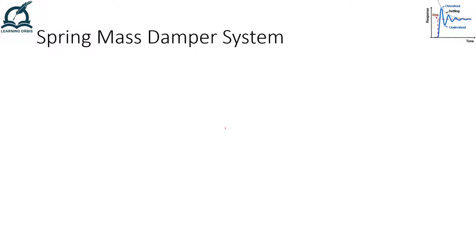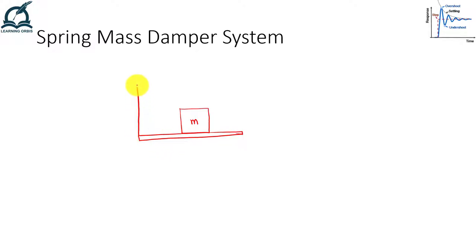So what is a spring-mass-damper system? It is an ideal second-order dynamic system, meaning its differential equation is of second order. We have a mass M placed on a level ground, attached to a wall through a damper with damping coefficient B and a spring with spring constant K.